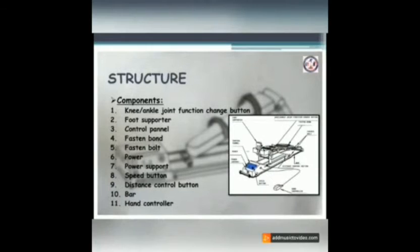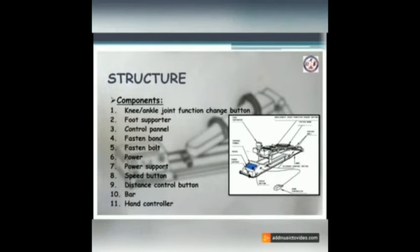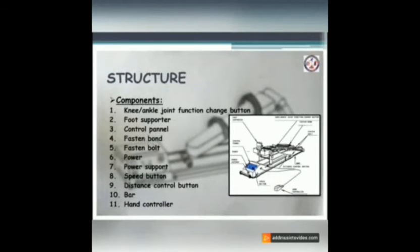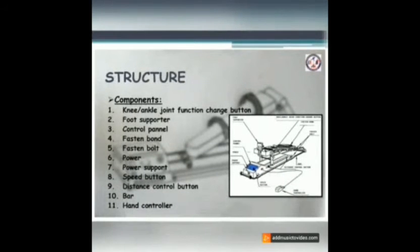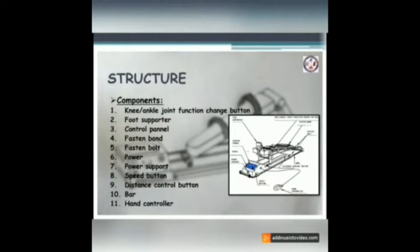The structure of CPM includes several components: ankle or knee joint function change button, foot supporter, control panel, fasten band, fasten bolt, power supply, power support, speed button, distance control button, bar, and hand controller.